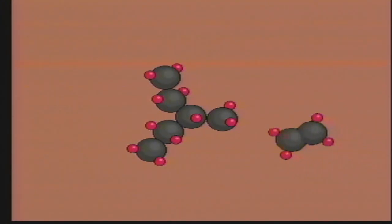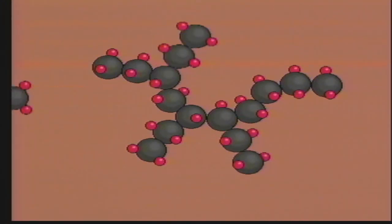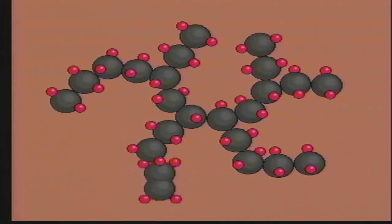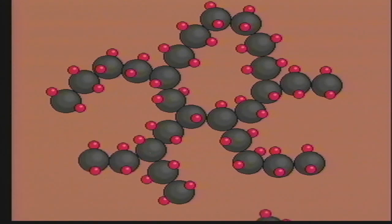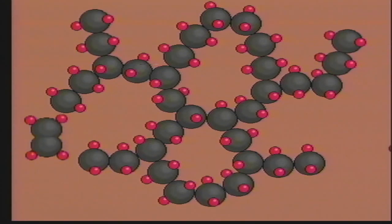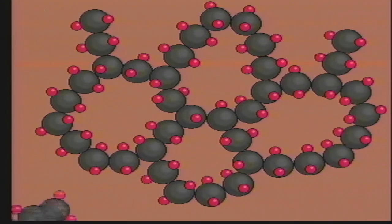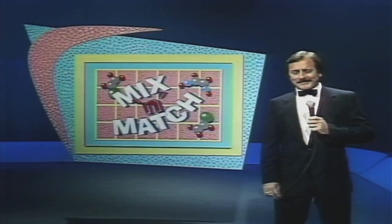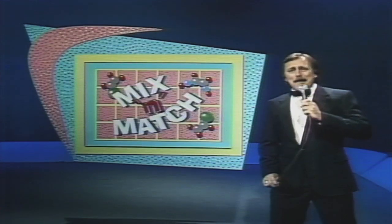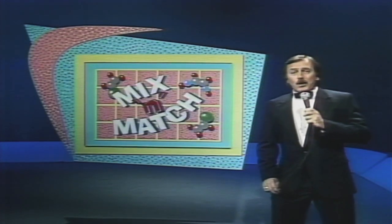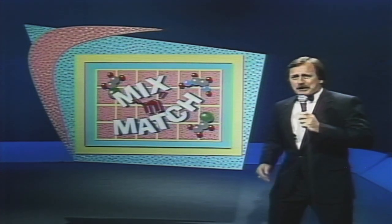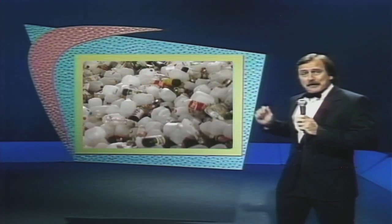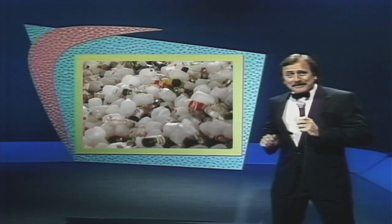Ethylene monomers link together in sheets to form the polymer polyethylene. Polyethylene is used for making plastic beverage bottles.